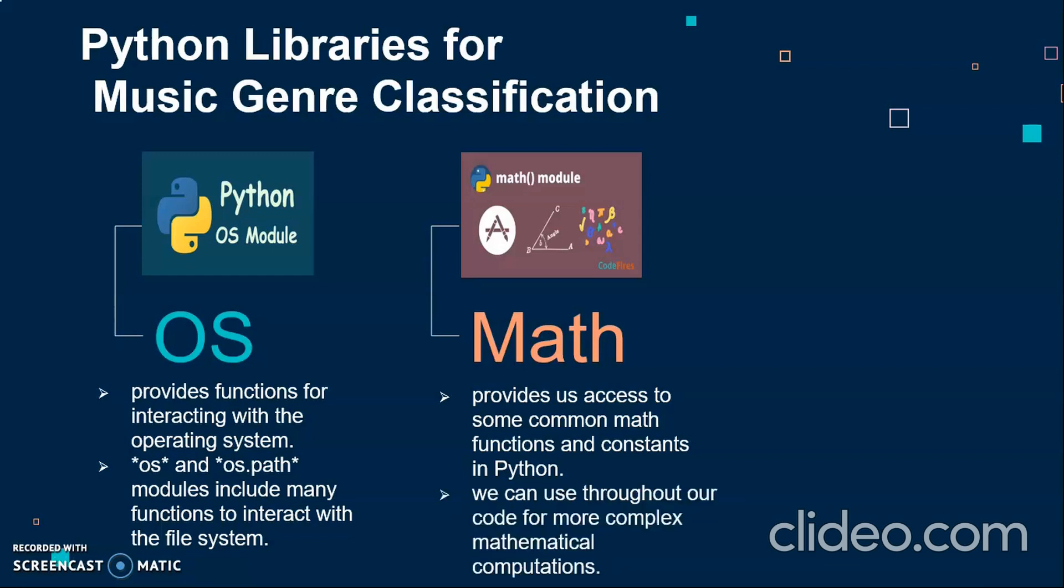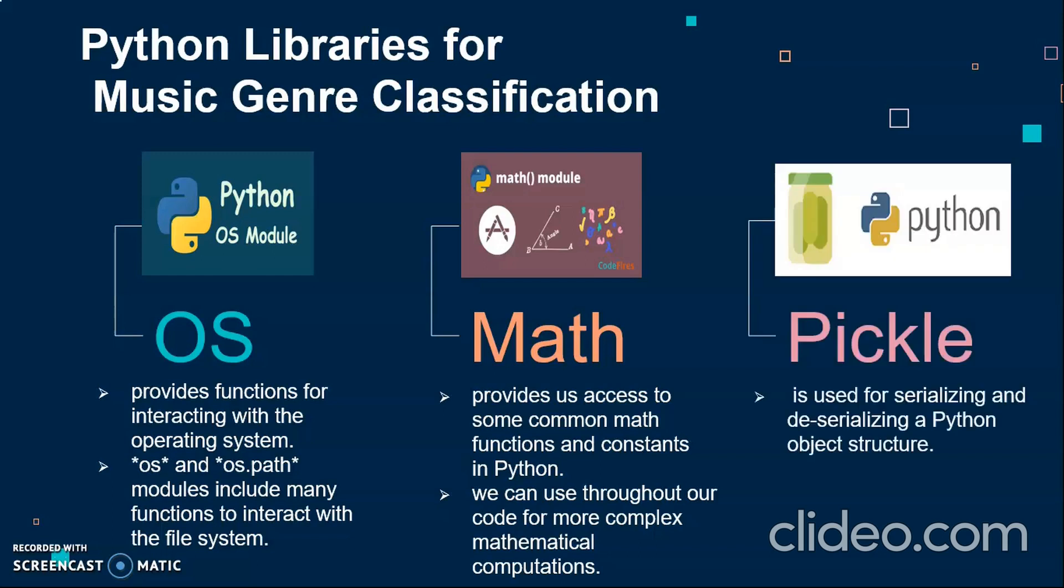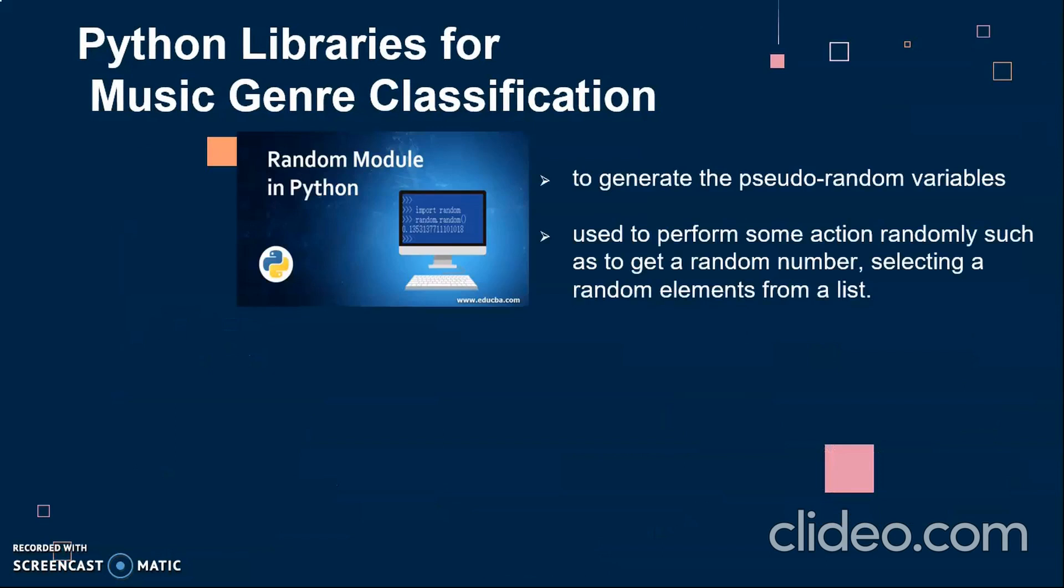We can also perform complex mathematical computations. Now the pickle library. Pickle library is used for serializing and deserializing a Python object structure. In Python, objects can be pickled so that they can be saved on the disk. In our module, we might save the genre or the music file on the disk. Moving forward, random library. Random library helps us to generate random variables or to select random elements from a list. In our module, we need random library for selecting a music file randomly and predicting its genre.